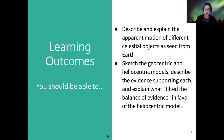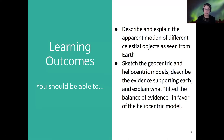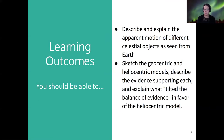The second learning outcome is to talk about the geocentric and the heliocentric models for how objects in the solar system move — that's Ptolemy's geocentric model and Copernicus's heliocentric model. We'll talk about which evidence supported each model and what tilted the balance of evidence in favor of heliocentrism.